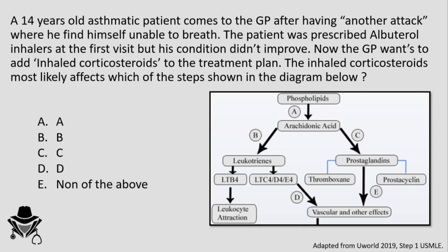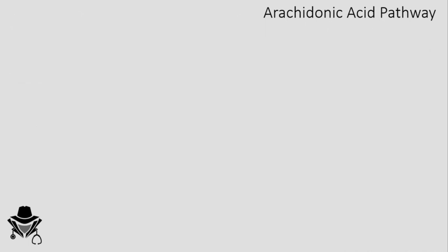The question asks which step inhaled corticosteroids most likely affect, as shown in the diagram. Clearly from this question we can see it is discussing the diagram on the right side, known as the arachidonic acid pathway. Throughout this video we will explain the arachidonic acid pathway, name the different drugs affecting it and its metabolites known as eicosanoids, and lastly wrap up by discussing the options and the answer.